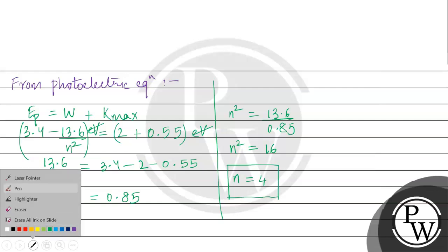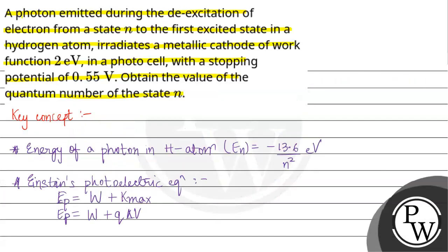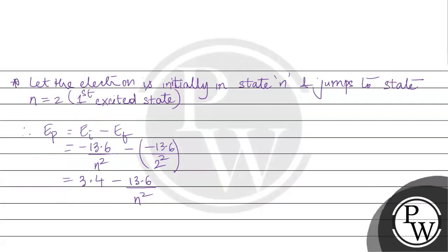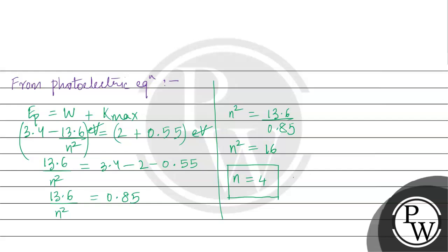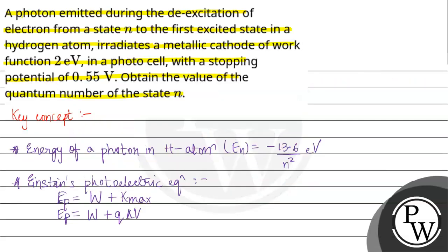So the final answer: the value of quantum number n of the state n is n = 4. This is the final answer. Hope you understand it well. All the best.